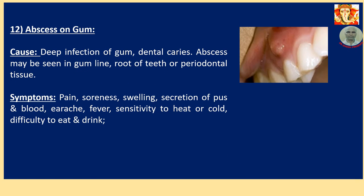Number 11: Abscess on Gum. Cause: Deep infection of gum and dental caries. Abscess may be seen in the gum line, root of teeth, or periodontal tissue. Symptoms: Pain, soreness, swelling, secretion of pus and blood, earache, fever, sensitivity to heat and cold, and difficulty to eat and drink.